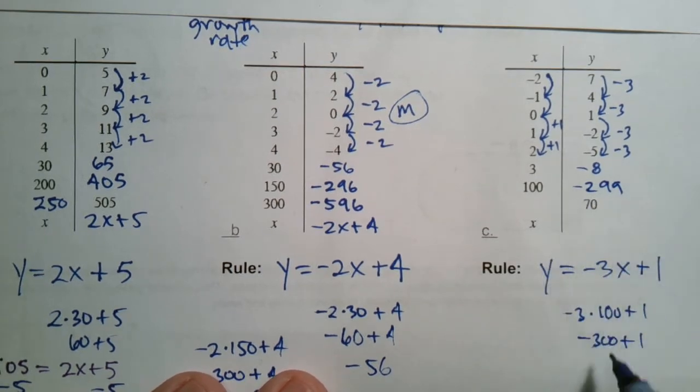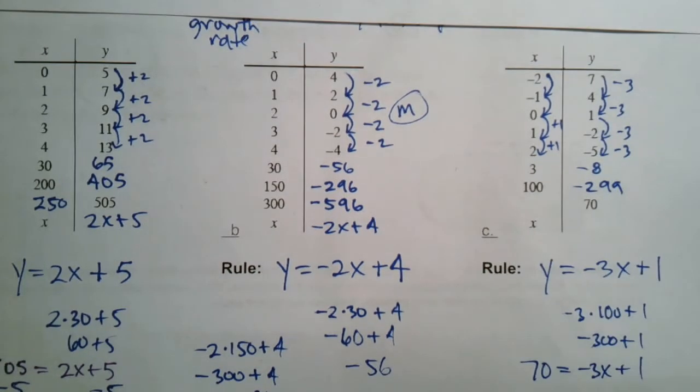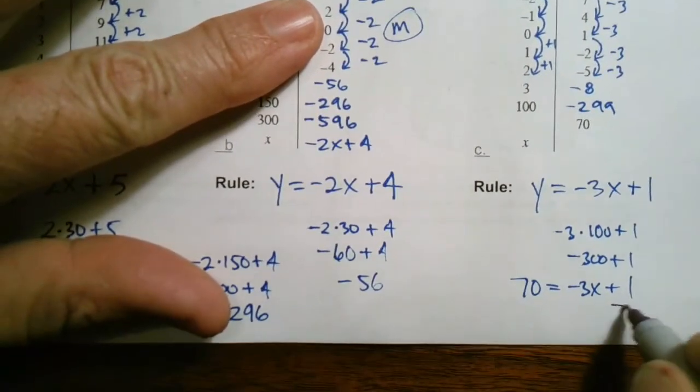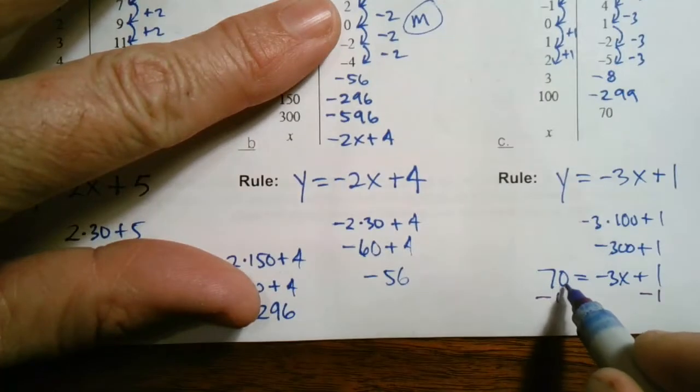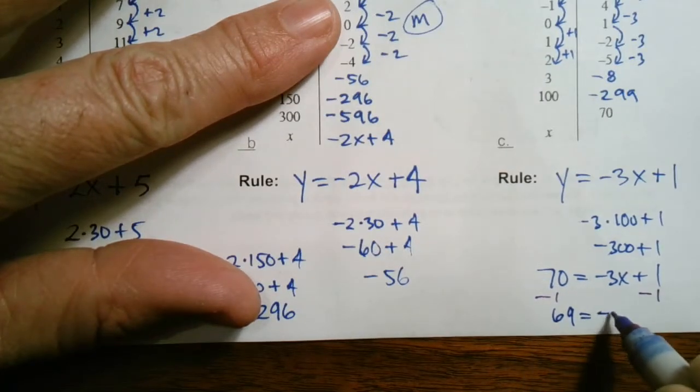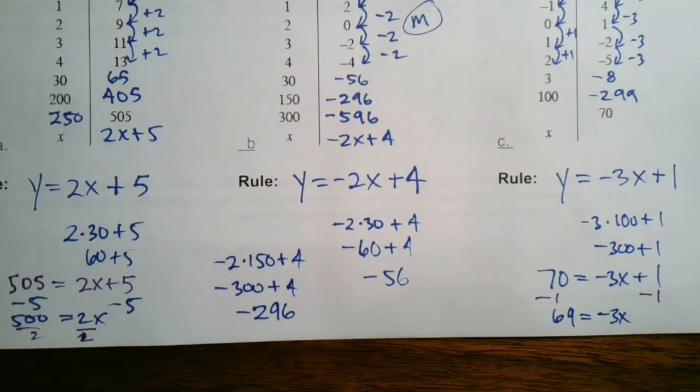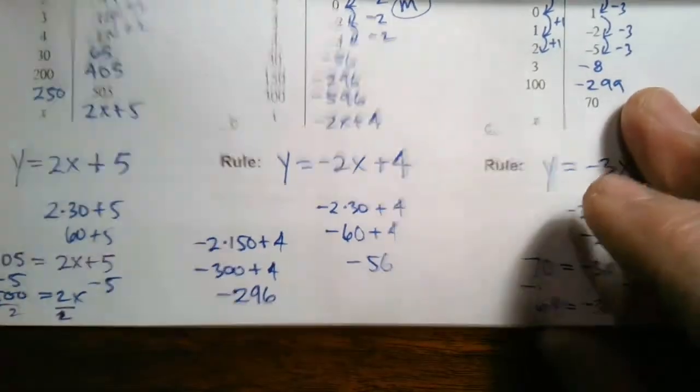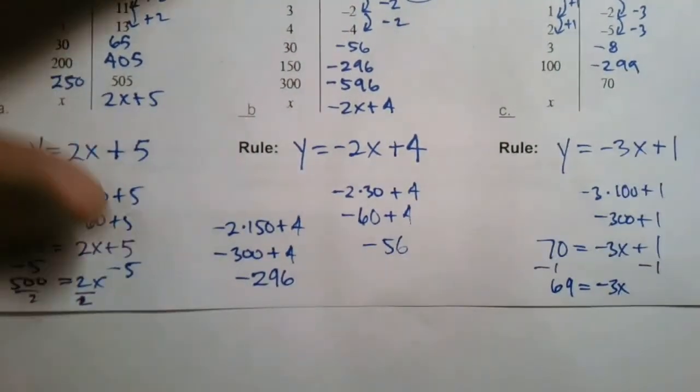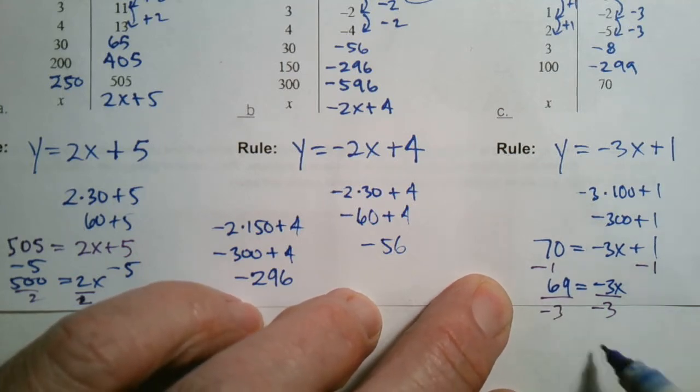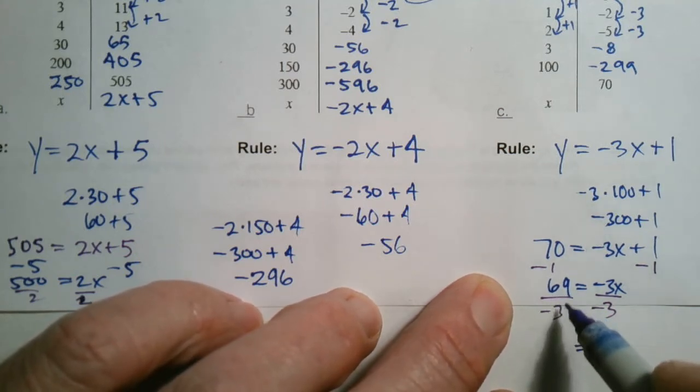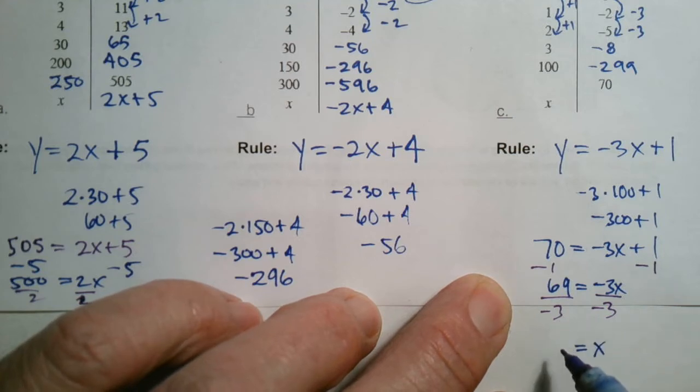This one, I've given my y, so I've got to plug in 70 in place of the y and then actually use the rule in reverse. Solve that equation. So what does that look like? So subtract 1 from both sides. I've got to solve for x. I get, so 70 minus 1 is 69 equals negative 3x. So at that point, I divide by negative 3. Running out of room here. I divide by negative 3, both sides. So that's going to give me my x, because I'm solving for x. So 69 divided by negative 3 is negative 23.